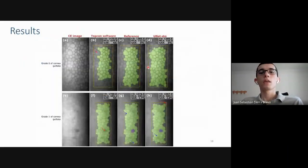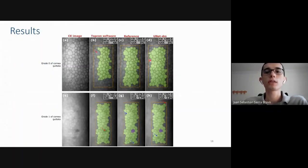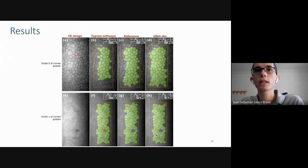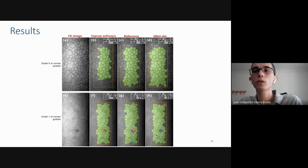Now I will show you our results. Here there are two examples of different health conditions. In the first column we have the cornea endothelium image, then in the second column we have the Topcon software segmentation, then we have our reference, which were the manually annotated segmentations, and finally we have the U-Net DM, which is our proposed method. Overall, all three segmentations in the two examples are very similar. One of the most important details is that the Topcon software misclassified this small gutta as a cell, and this was corrected and well classified in the reference and by our model.